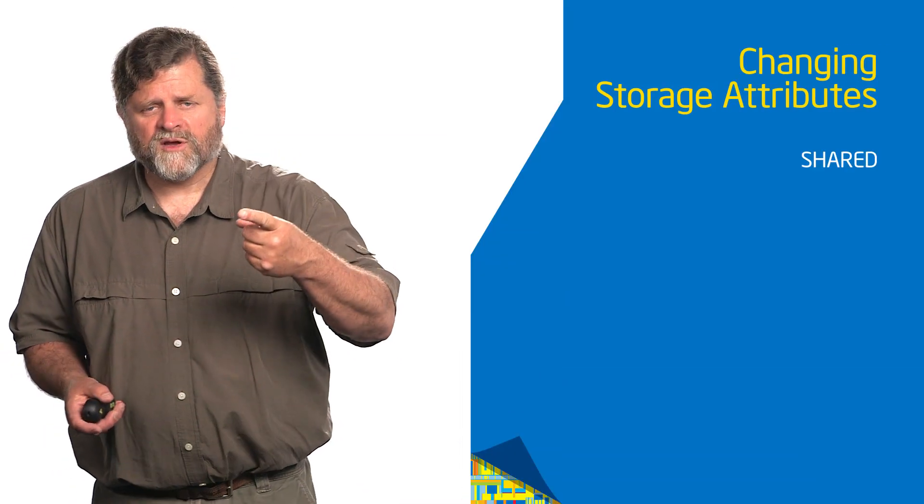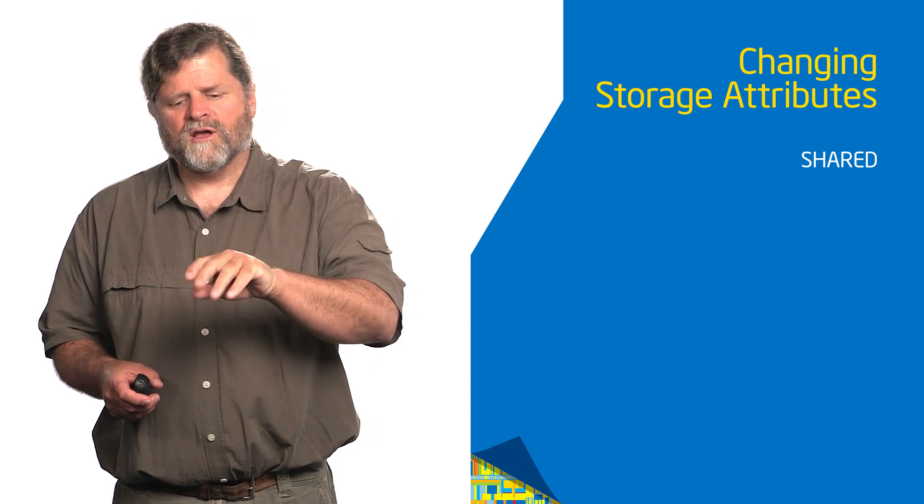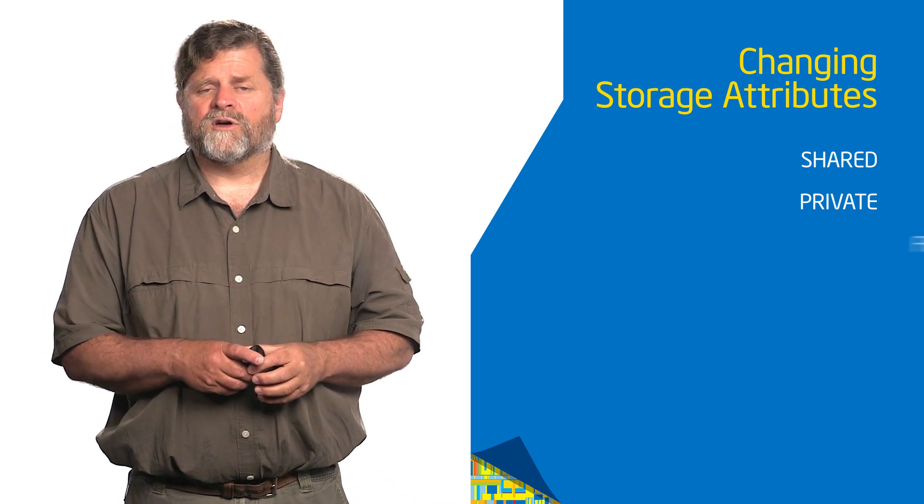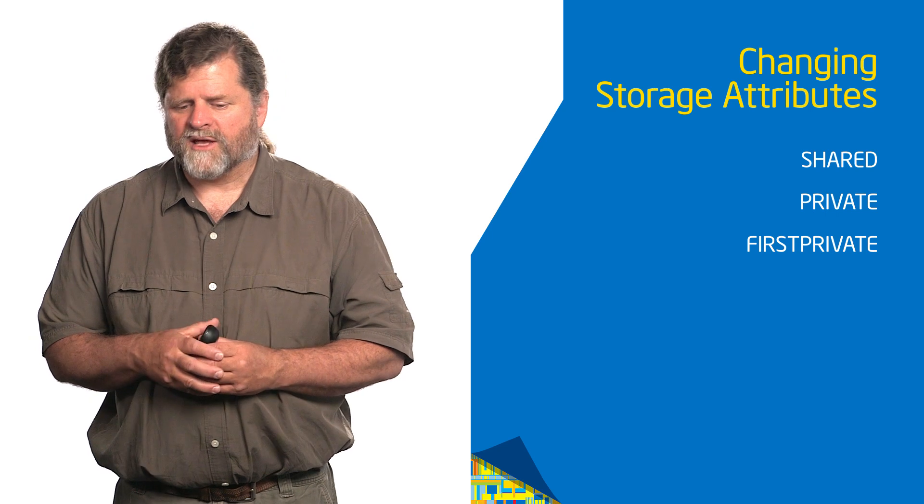There are times you want to change the storage attributes. I have a construct and some variables that exist prior to that construct, and I want to change their storage attribute inside the construct. I can call them shared — a clause on that construct that says these are shared. I can have a clause that says these are private, meaning they're local to each thread. Or I can declare that each one is first private, last private, or change the default attributes.